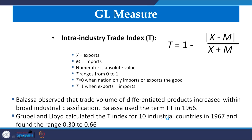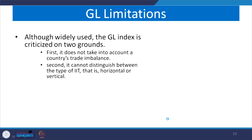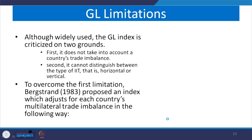One of the shortcomings of the GL method, as mentioned by other approaches, is that it did not talk about trade balances because it takes the absolute value. Furthermore, it nowhere differentiates horizontal or vertical approaches of measuring intra-industry trade.